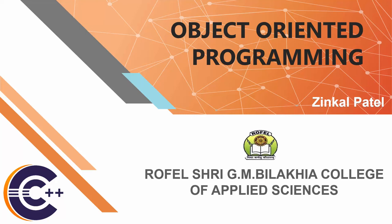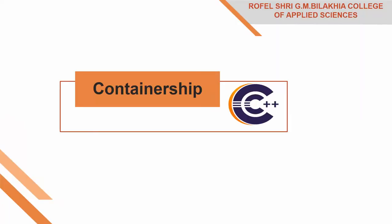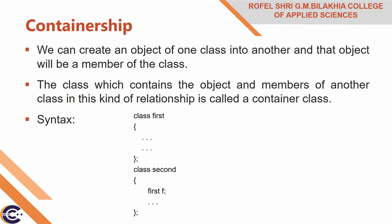Welcome to Object Oriented Programming. Today I am going to explain the next topic, which is the last topic of unit number two — that is containership. First of all, what is containership? We can create an object of one class into another class, and that object will be a member of that class. This type of relationship between classes is known as containership, or it is also called a 'has-a' type of relationship, where one class contains the object of another class.